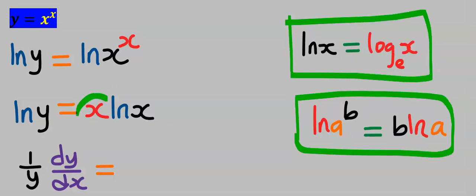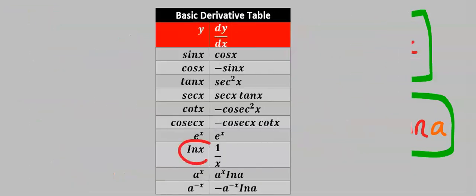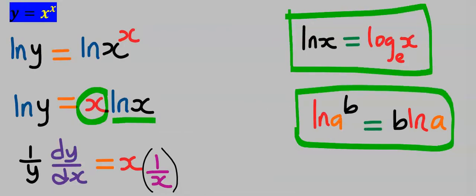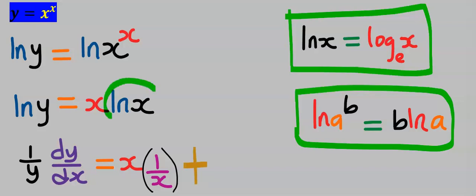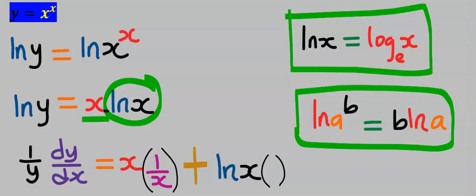Next we apply product rule to this function. Keep x constant, then differentiate ln(x) — the derivative of ln(x) is one over x. Next, according to the product rule, we introduce a plus. Then keep ln(x) constant and differentiate x. The differentiation of x is one.